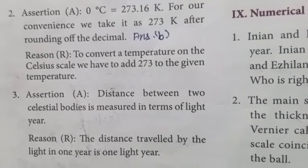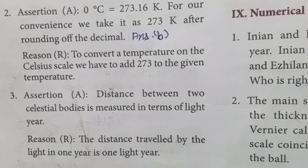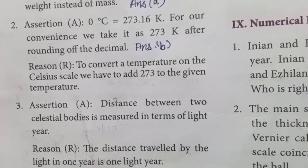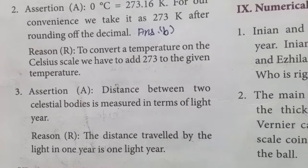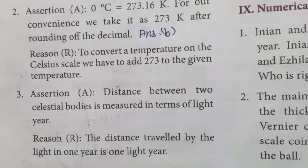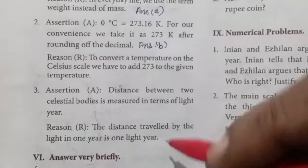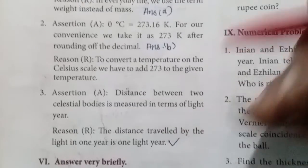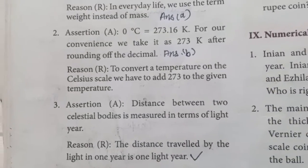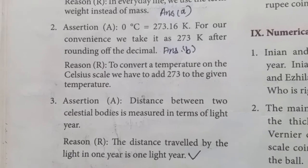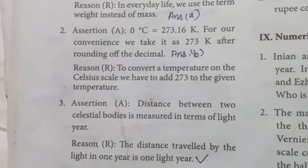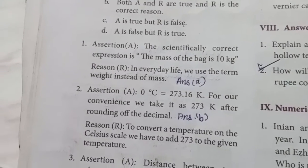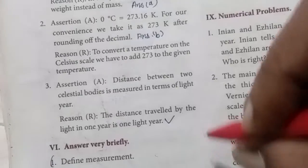Assertion: distance between two celestial bodies is measured in terms of light year. Reason: the distance traveled by light in one year is one light year. The reason statement is correct, but the assertion that distance between two celestial bodies is measured in light years — is that true? No, it is a false statement.